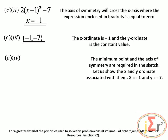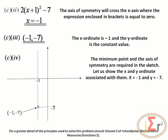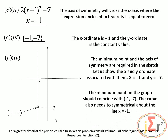We need to state the coordinates of the minimum point. The x-ordinate is negative 1 and the y-ordinate is the constant value negative 7. So the minimum point is (negative 1, negative 7). The minimum point and axis of symmetry are required in the sketch; the curve must be symmetrical about x equals negative 1 with minimum at (negative 1, negative 7).